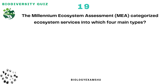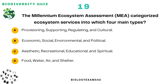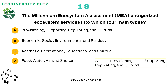Question number 19: The Millennium Ecosystem Assessment (MEA) categorized ecosystem services into which four main types? Option A: Provisioning, supporting, regulating, and cultural. Option B: Economic, social, environmental, and political. Option C: Aesthetic, recreational, educational, and spiritual. Option D: Food, water, air, and shelter. The correct answer is: provisioning, supporting, regulating, and cultural.